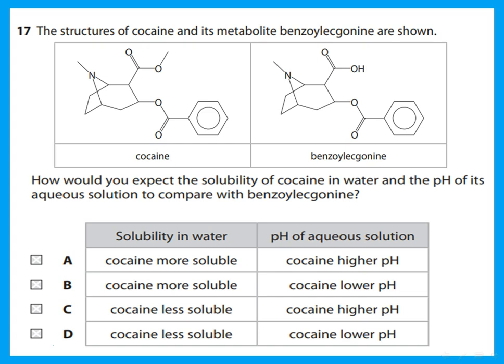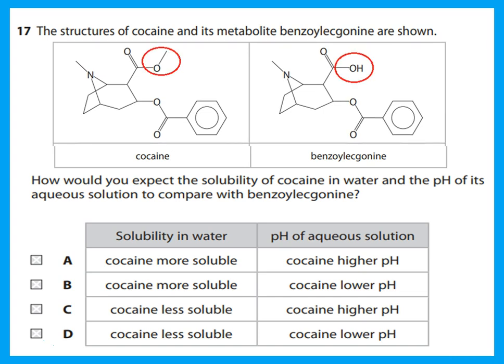The structures of cocaine and another molecule are shown. Cocaine is an ester while the other compound is an acid. Acids form hydrogen bonds with water so are more soluble; the ester (cocaine) will be less soluble than the acid. Regarding pH: the acidic compound has a lower pH, so cocaine will have a higher pH than the acid.